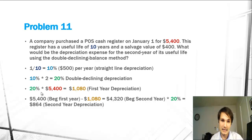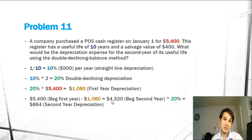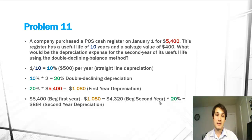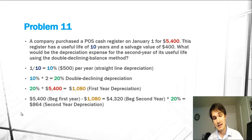Then we take the beginning balance of year one, which is $5,400, and subtract out $1,080 to get our beginning of year two balance, which is $4,320. We multiply that by our 20% double declining balance rate in order to get our second year depreciation, which is going to be the answer.